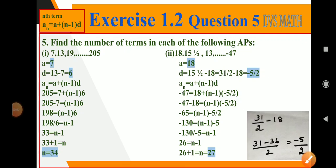Question number 5: Find the number of terms in the following APs. We have to find the number of terms, means n value. Here we have an AP: 7, 13, 19, up to 205.